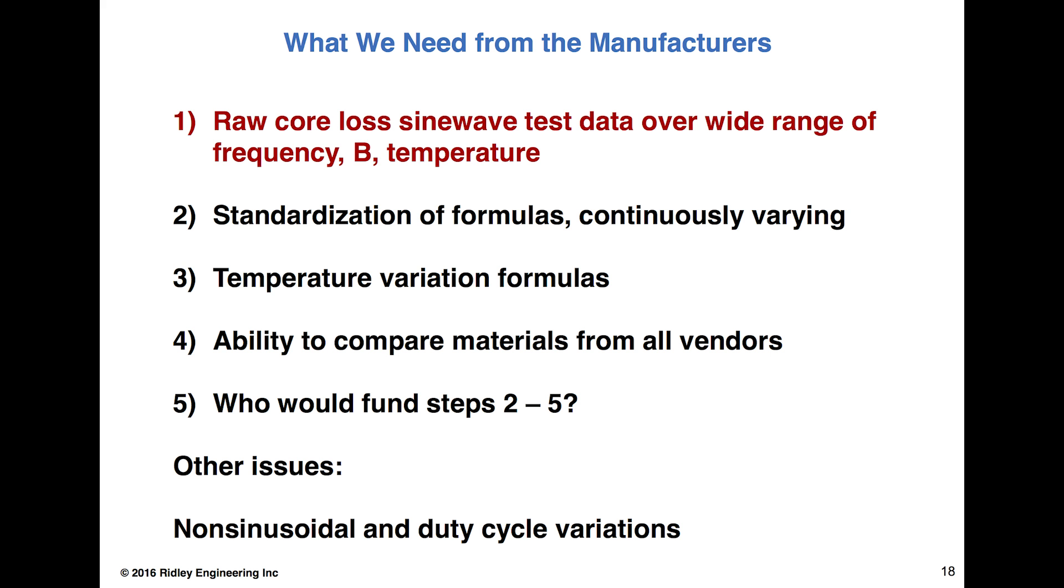But for some reason we never get the raw data. I'd like to see something more than just the curves from the manufacturers, because we spend all our time trying to decipher those curves and measure them. It would be really nice if we could get the raw core loss data from them that lets us do our own approximation on the curves. Standardization of formulas would be nice. Temperature variation formulas are also important, rather than just a curve, because the temperature variation is huge. And I'd like to see the ability to compare materials from all vendors so we can make better choices very quickly. It's very tedious at this point.